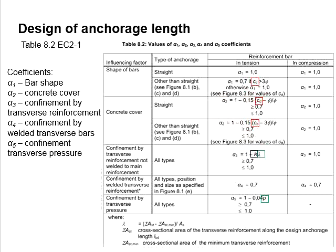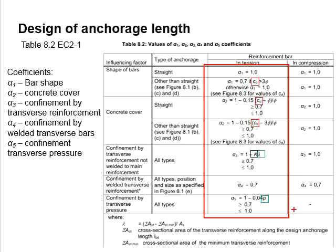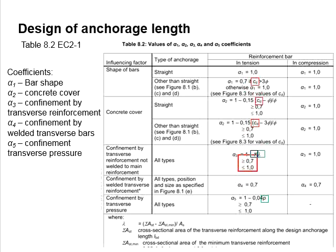In fact, all the coefficients alpha 1 to alpha 5 are to be within the range of 0.7 to 1.0. Each coefficient is not to be less than 0.7 and not to be greater than 1.0.